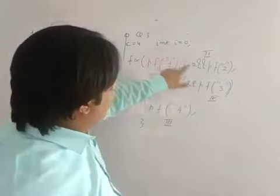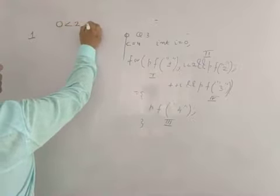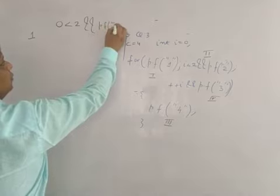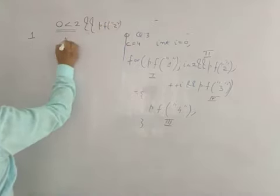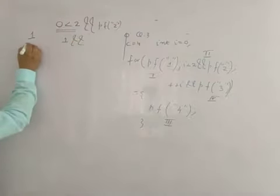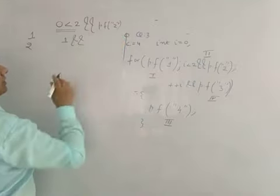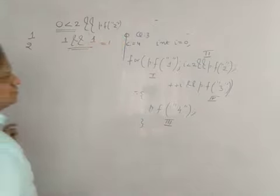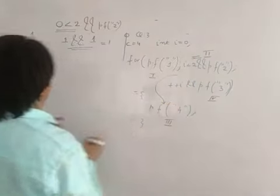Now in the condition, the value of I is 0, so we check: 0 less than 2 — condition is true, it returns 1. Then AND AND: printf 2 executes, it prints 2 and returns the number of characters which is 1. So 1 AND AND 1 — condition is true, so we go down and print 4.